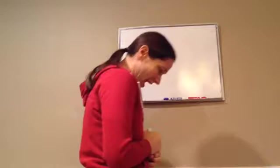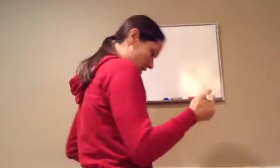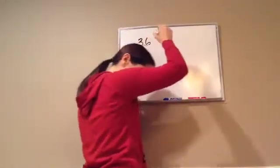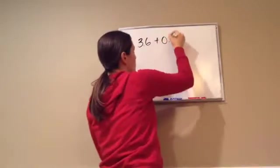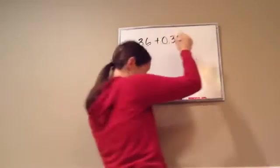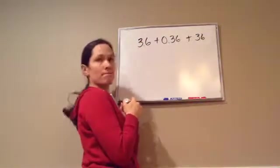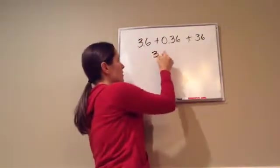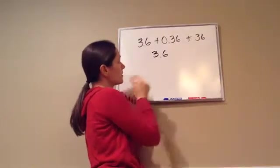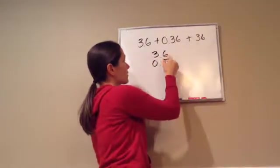Let's start with adding and subtracting. So for example, if you saw 3.6 plus 0.36 plus 36, how would I line this up? You put 3.6 on top, then you line up the decimals. Okay, 0.36.